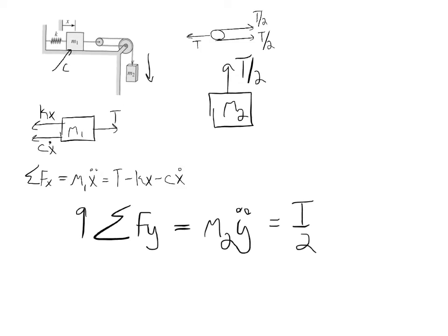And y is equal to 2x, therefore y double dot is equal to 2x double dot. So if I were to plug that in, then I would have m2 2 times m2 x double dot is equal to t over 2.